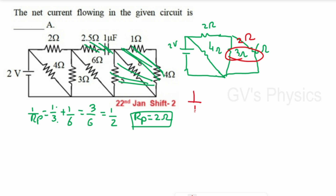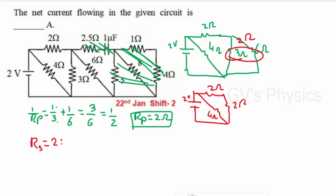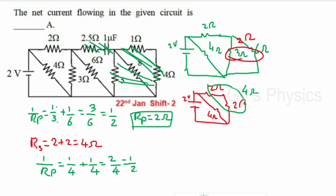Redrawing again: we have 2 ohm and the combined 2 ohm in series, giving 4 ohm. This 4 ohm is in parallel with the 4 ohm diagonal resistance: 1/Rp = 1/4 + 1/4 = 2/4 = 1/2, so Rp = 2 ohm. The effective resistance is 2 ohm.